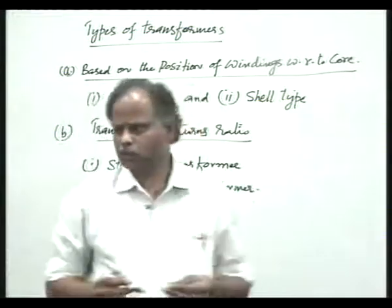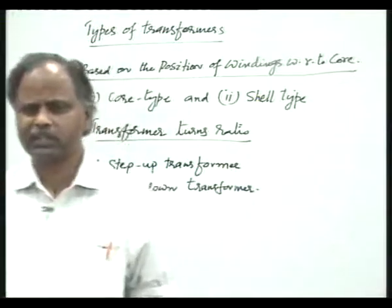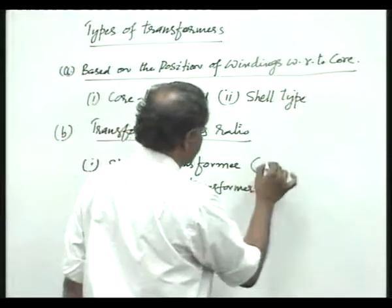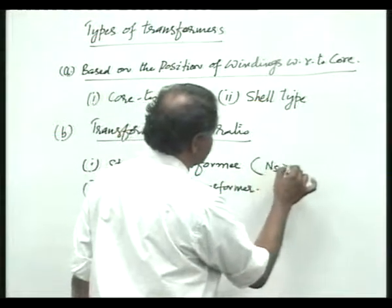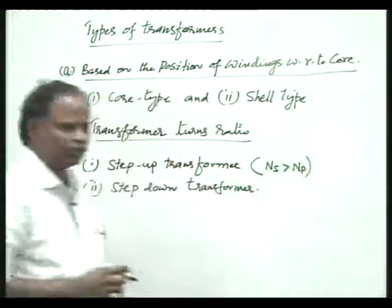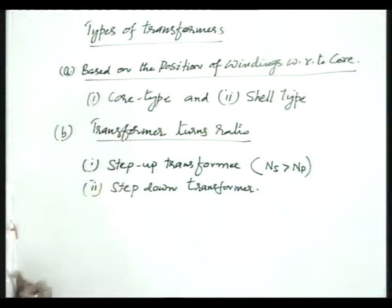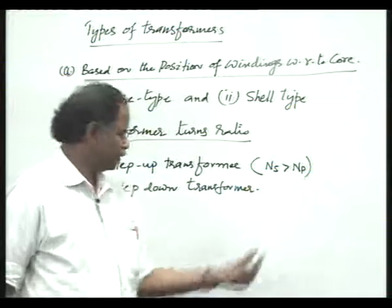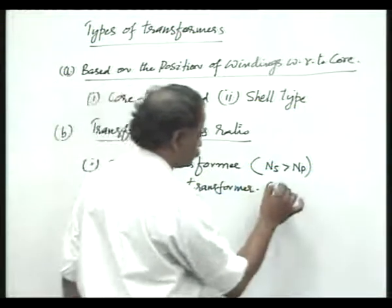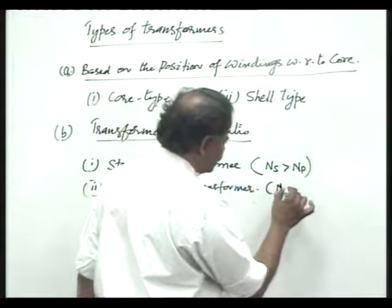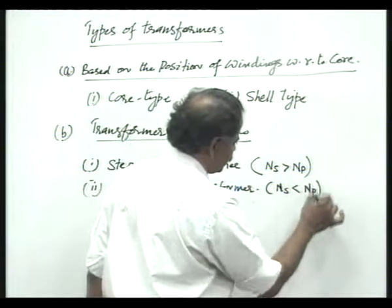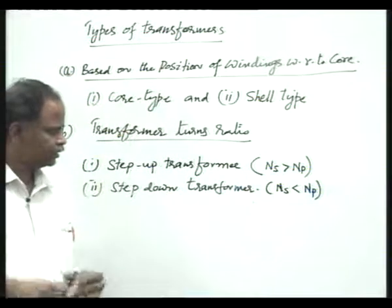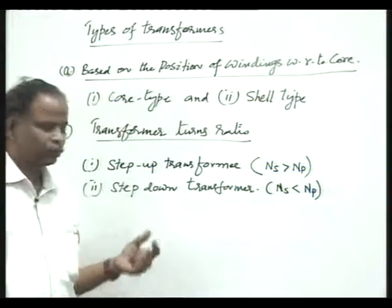In case of a step up transformer, the number of turns on the secondary is greater than the number of turns on the primary — please remember this. And in a step down transformer, it is basically the opposite: the number of turns on the secondary is less than the number of turns in the primary. That means on the primary side we have more turns and on the secondary side we have less turns.